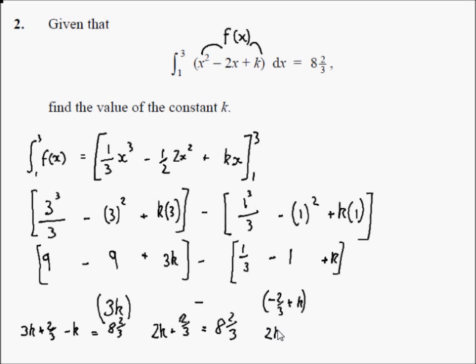You get 2k equals 8, so that means k is 4.